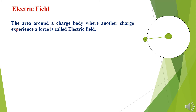Electric field: the area around a charged body where another charge experiences a force is called an electric field. For example, we have taken a positive charge here and its field is represented by this circle. Within this circle, in this particular area, other charges will experience a force due to the electric field of this positive charge.